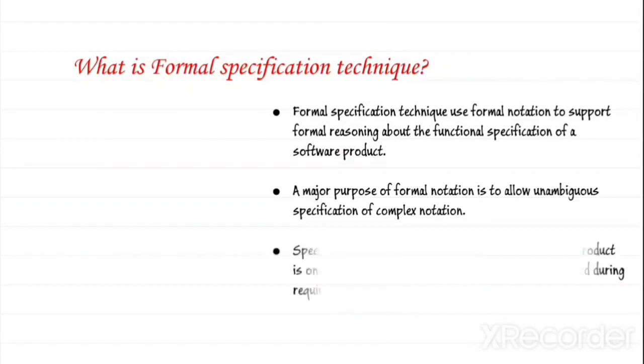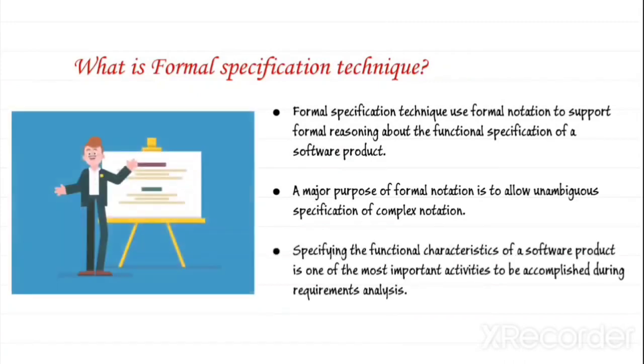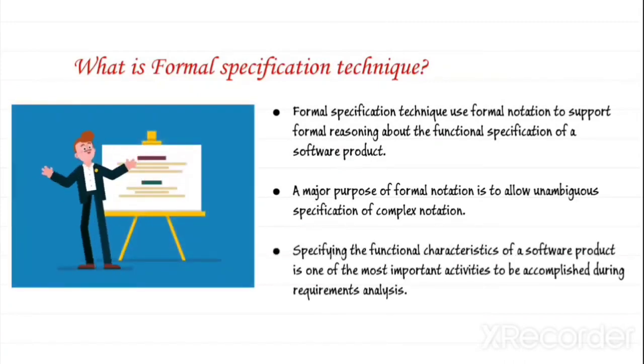What is formal specification technique? Formal specification techniques use formal notation to support formal reasoning about the functional specification of a software product. A major purpose of formal notation is to allow an unambiguous specification of complex notation.